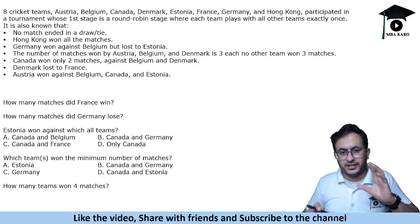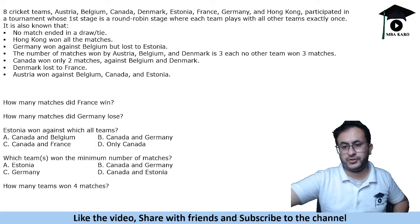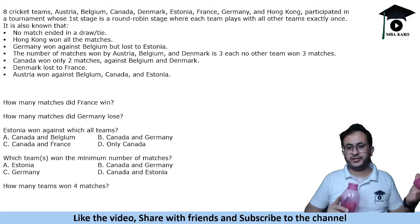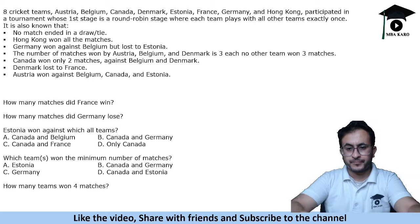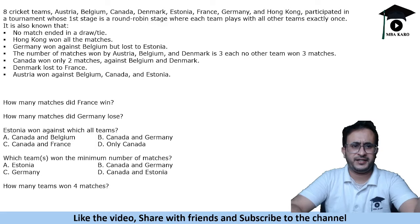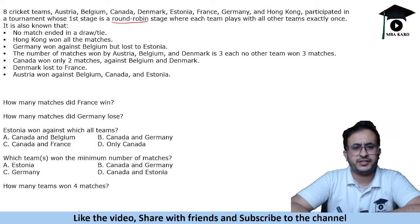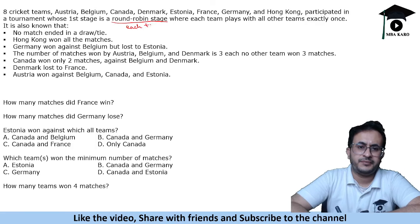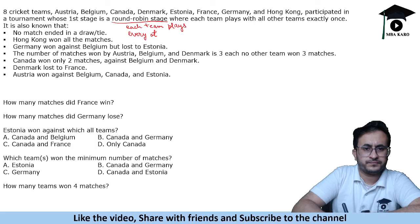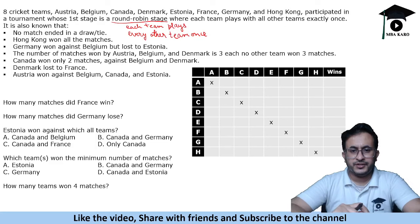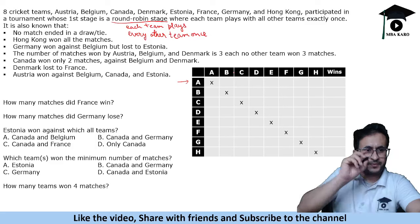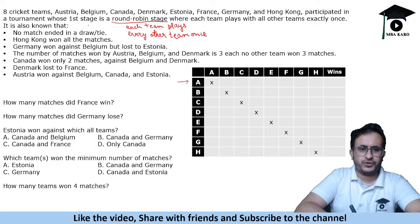The next set involves 8 cricket teams — Austria, Belgium, Canada, Denmark, Estonia, France, Germany, and Hong Kong — in a round-robin stage where each team plays every other team once. No match ends in a draw. We need to fill a win-loss table. Hong Kong won all 7 of their matches, so all other teams lost to Hong Kong. Germany won against Belgium but lost to Estonia.